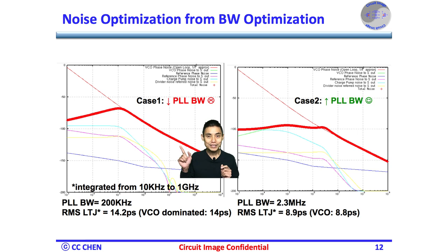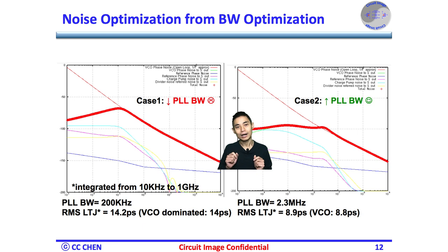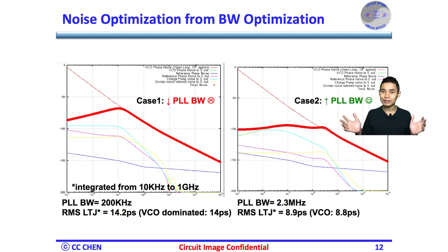and the total phase noise in thick red lines at the high-frequency overlap with the VCO's phase noise. Therefore, the RMS long-term jitter LTJ is 14.2 ps, which was dominated by the VCO's 14 ps integrated from 10 kHz to 1 GHz.